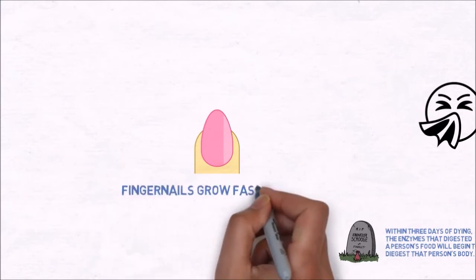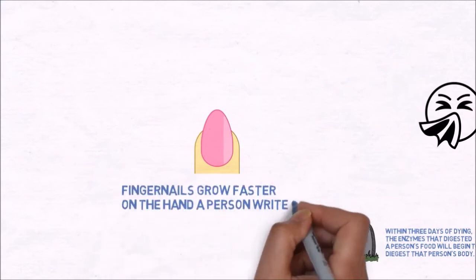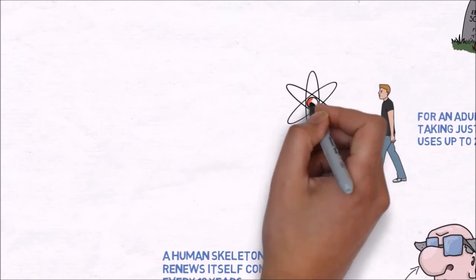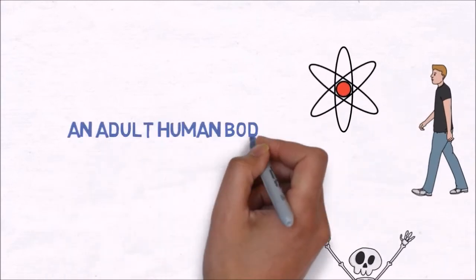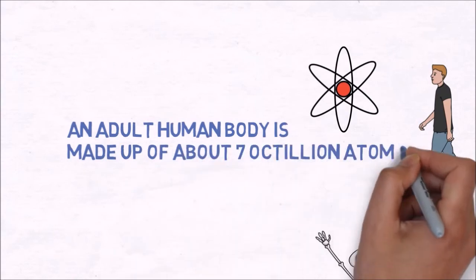Fingernails grow faster on the hand a person writes with. An adult human body is made up of about seven octillion atoms.